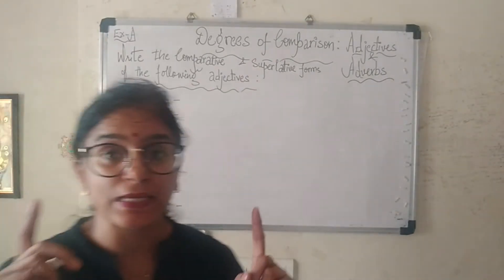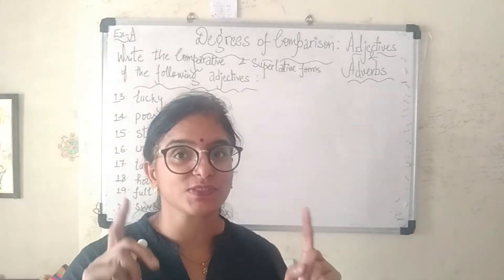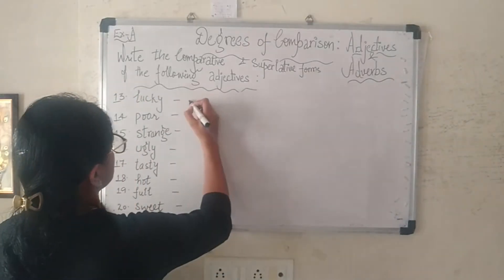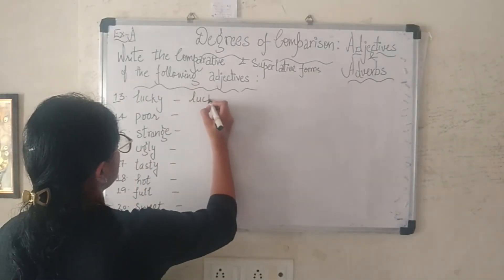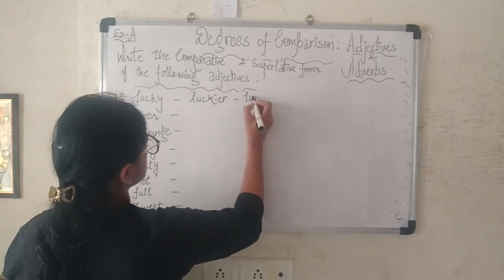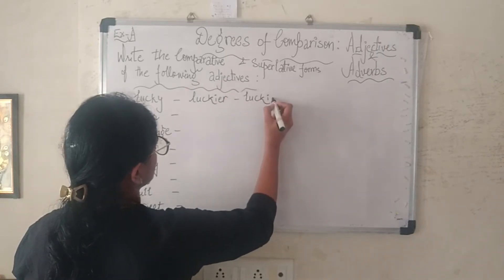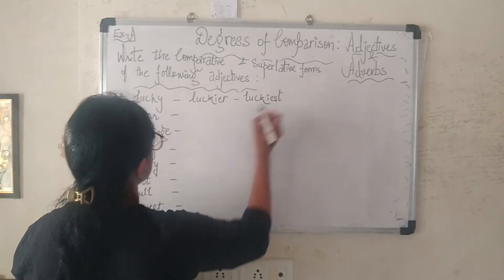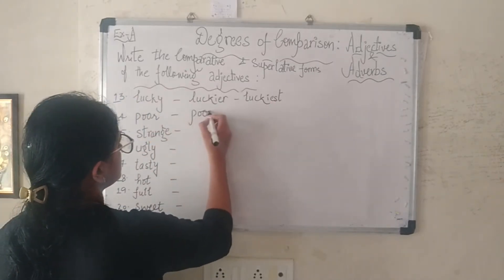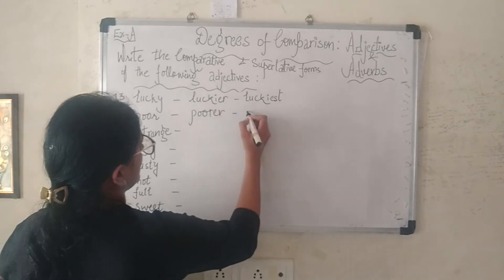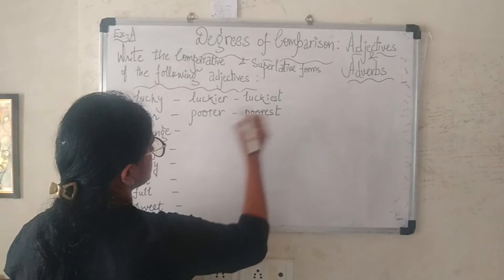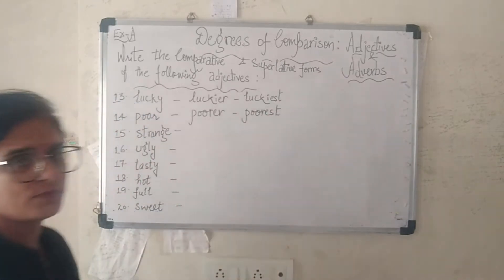The next adjective is 'lucky' (l-u-c-k-y): its comparative is 'luckier' (l-u-c-k-i-e-r) and superlative is 'luckiest' (l-u-c-k-i-e-s-t). Then 'poor': 'poorer' and 'poorest' — simply add 'er' and 'est' at the end.